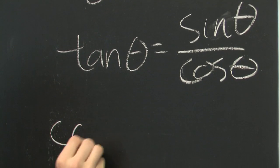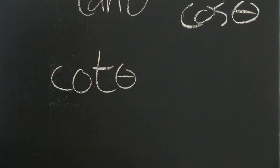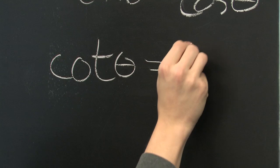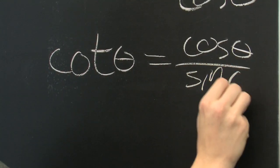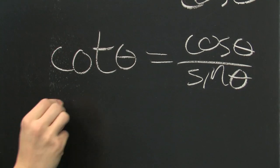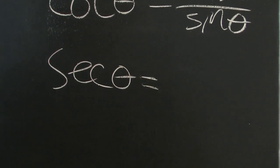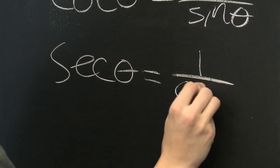We have cotangent, which is equal to cosine over sine. We have secant, which is equal to 1 over cosine.